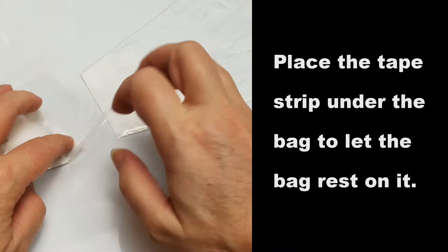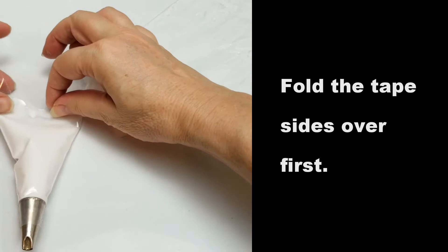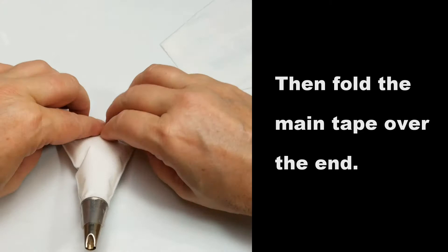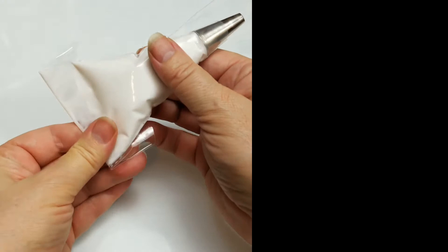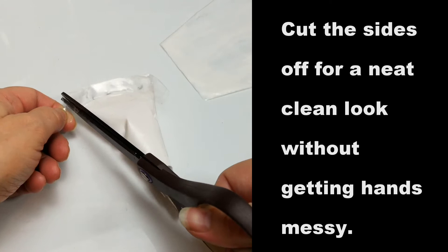Place the tape strip under the bag and let the bag rest on it. Fold the tape sides over first. Then fold the main tape over the end. Cut the sides off for a neat clean look without getting hands messy.